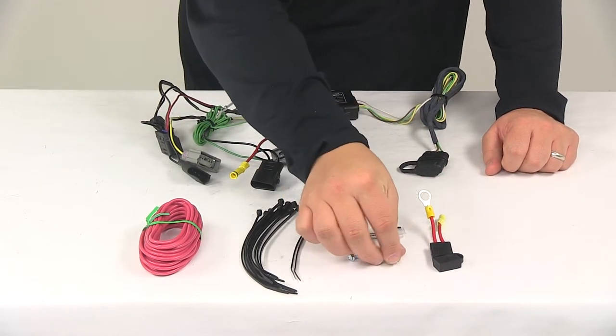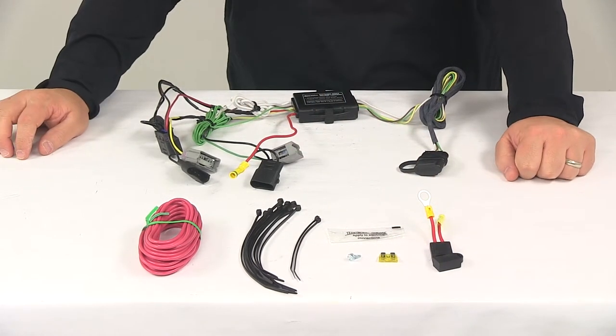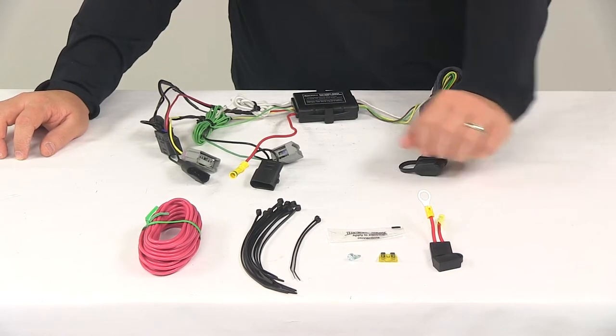It does come with your 20 amp fuse. It goes directly in there. It's got the fuse cap that goes over to keep it safe and protected. And then you can secure any excess or slack in your wiring with the included cable ties.